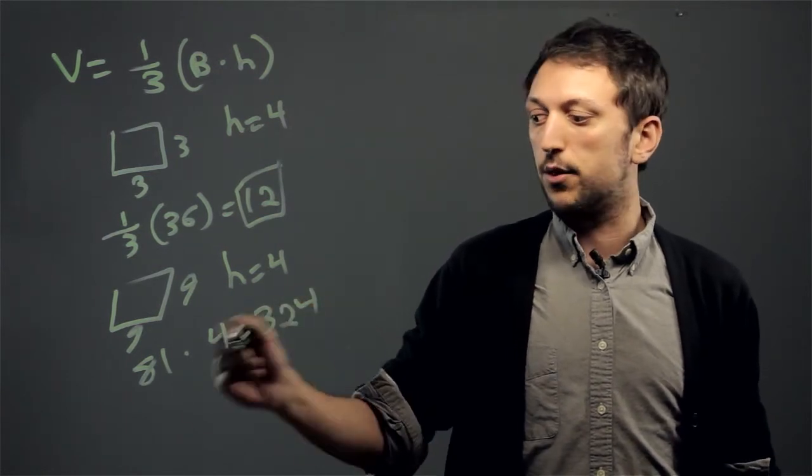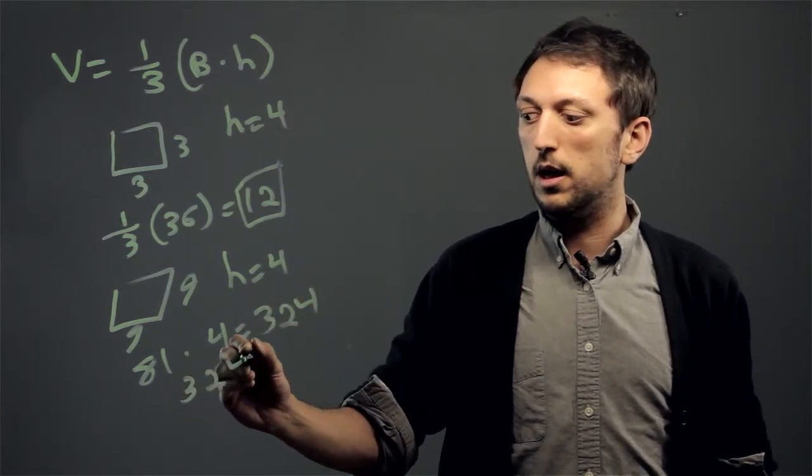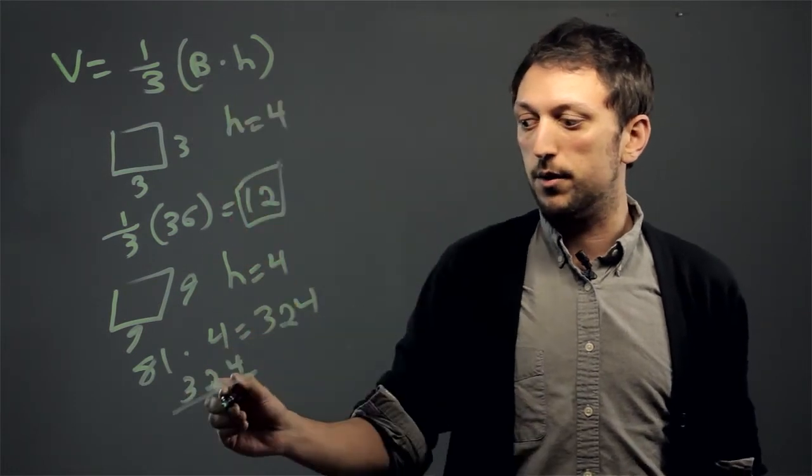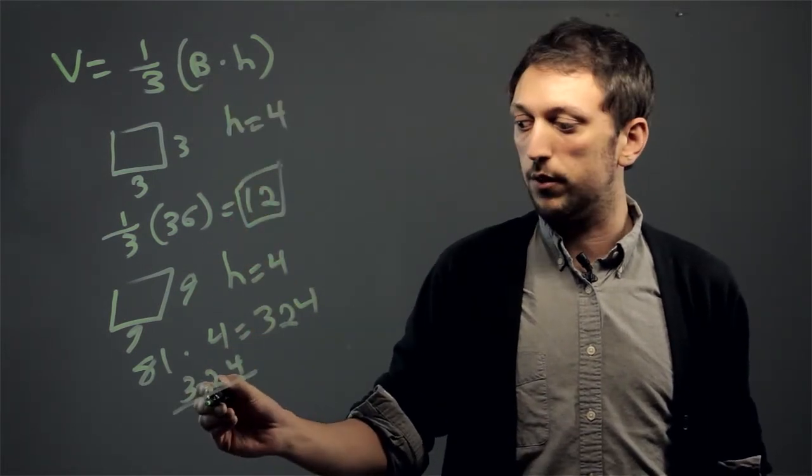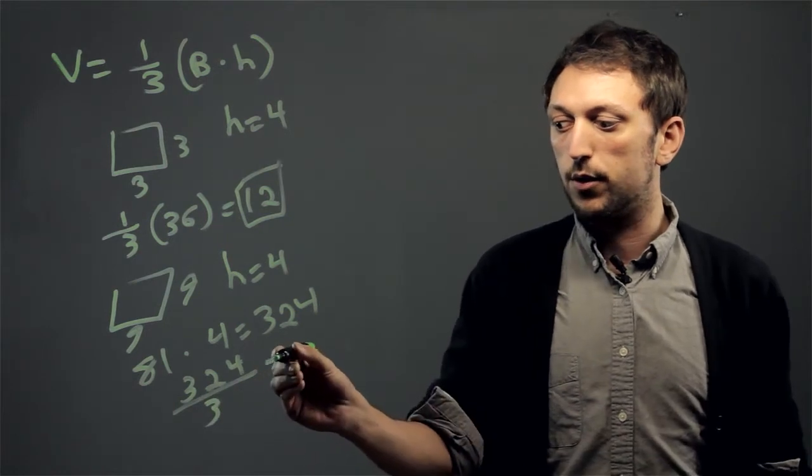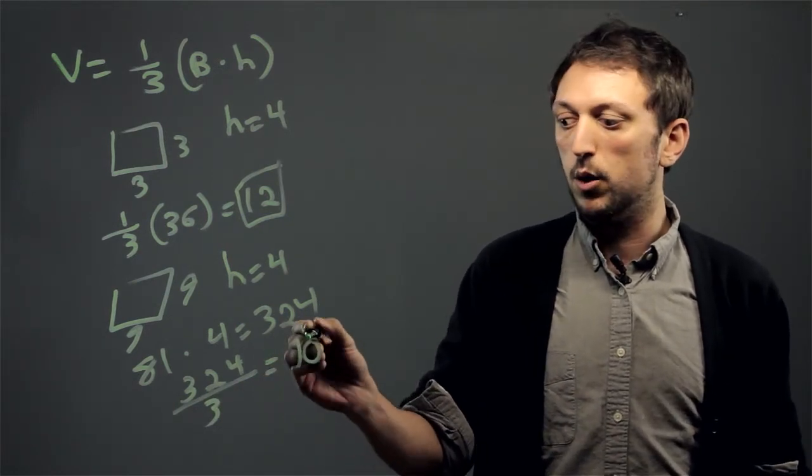We're going to take 324 and multiply it by one-third. We get 324 over 3, which equals 108.